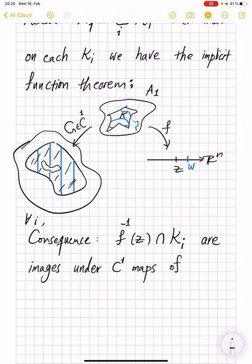Of subsets of R^{m-n}. So in this new coordinate system, here is R^n, and here is the remaining coordinates, R^{m-n}.